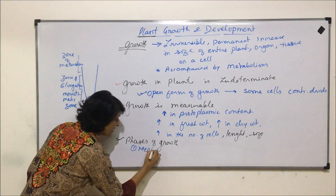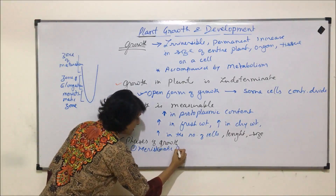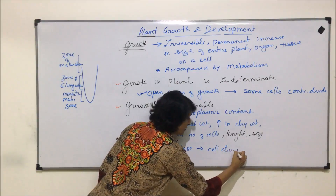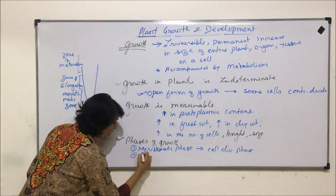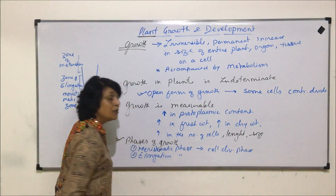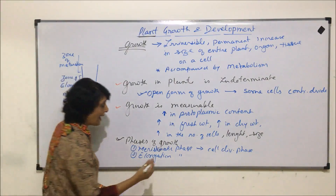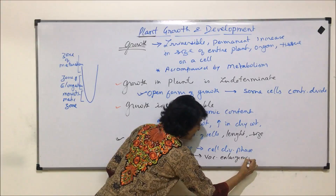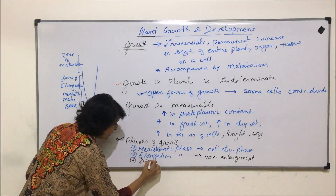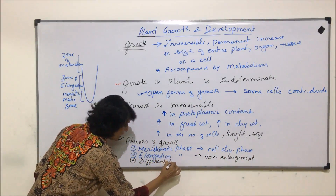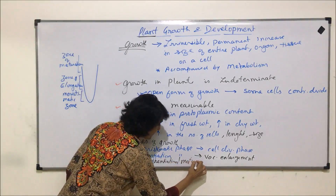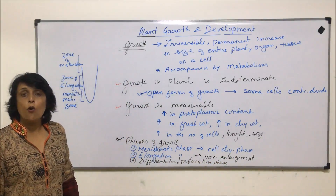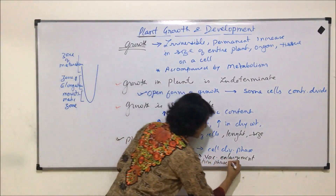The first phase is the meristematic phase, where the cells are dividing — it is also considered the cell division phase. The second is the elongation phase, during which the vacuole is enlarged, so it is also called vacuolar enlargement. The third is known as the differentiation or maturation phase, in which the cells get differentiated or mature to form and perform various special functions.